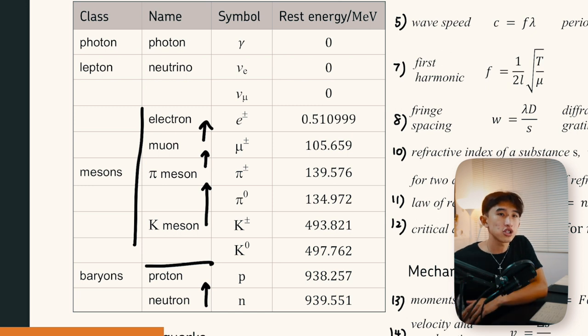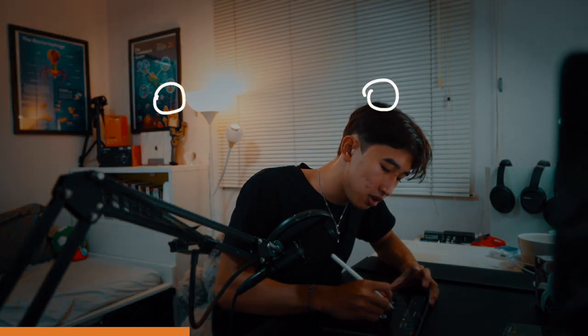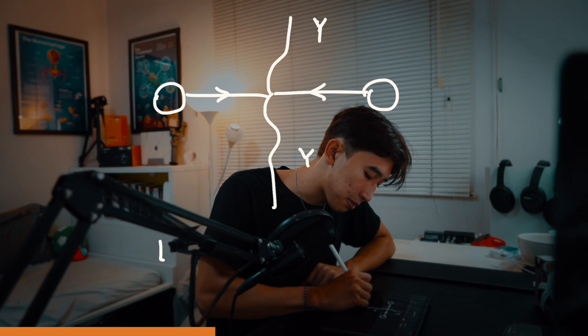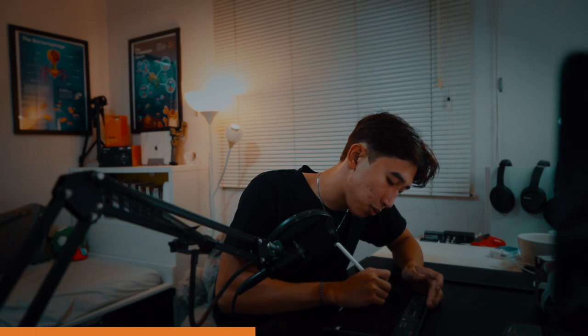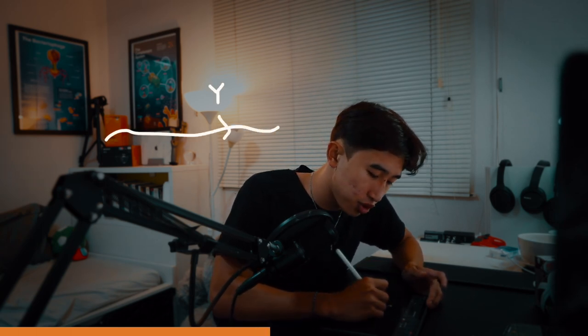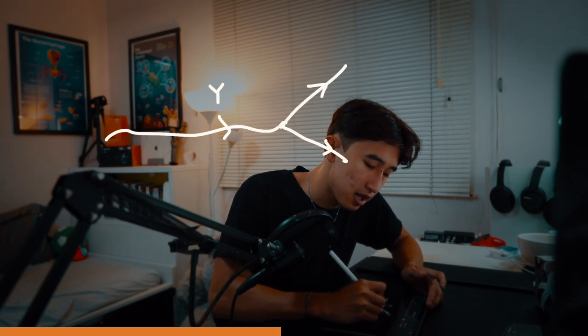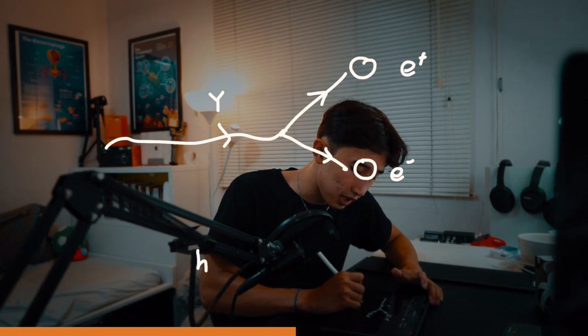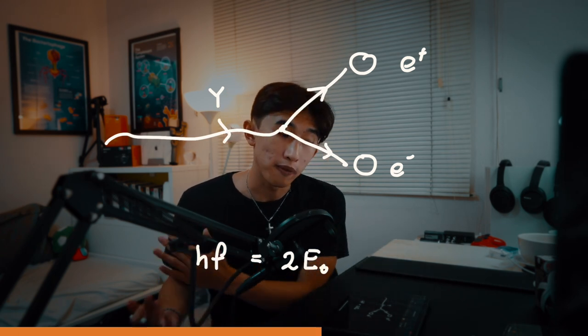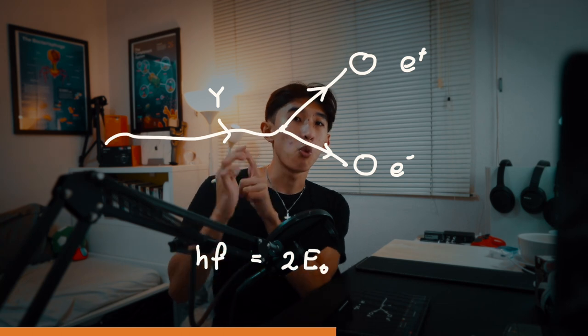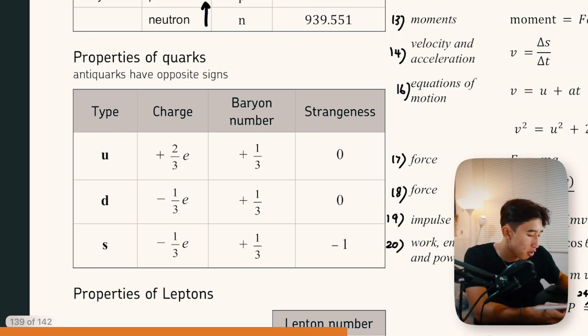Rest energies are used for calculations involving annihilation and pair production. Annihilation is when a particle and an anti-particle collide, producing two gamma rays of equal energy — each gamma ray's energy equals the rest energy of either the particle or the anti-particle. Pair production is when a gamma ray of sufficient energy produces a particle–anti-particle pair, so the gamma ray's energy must equal at least twice the rest energy of the particle.